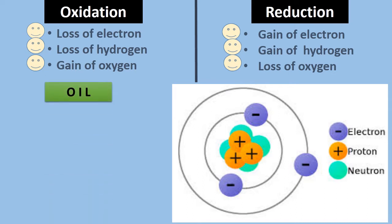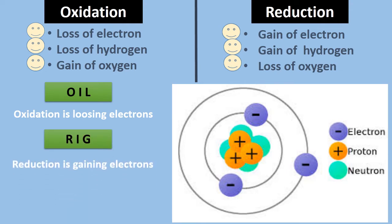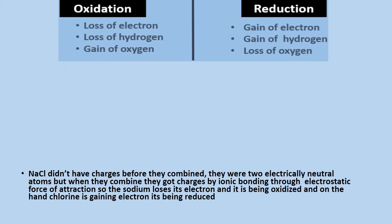We can remember this using the acronym OIL RIG: Oxidation Is Losing electrons, Reduction Is Gaining electrons. To summarize: in oxidation there is loss of electrons and loss of hydrogen; in reduction there is gain of electrons and gain of hydrogen. These are the reverse of each other.